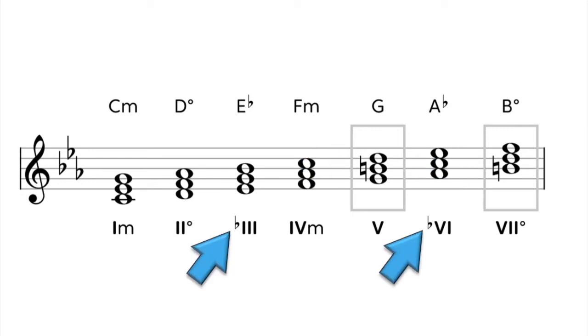Let's also look at the b3 and the b6 roman numerals. The reason that there is a flat in the roman numeral is because those roots are a minor third and a minor sixth away from C.